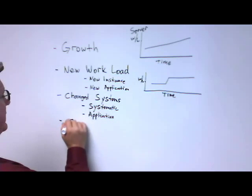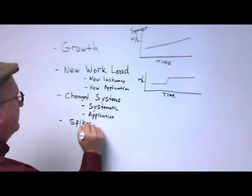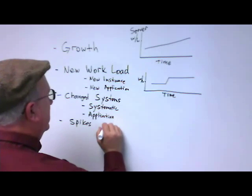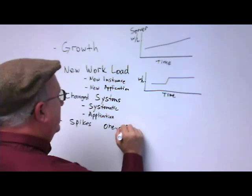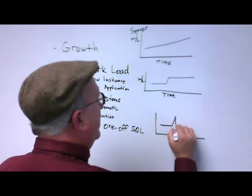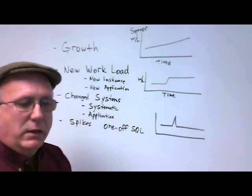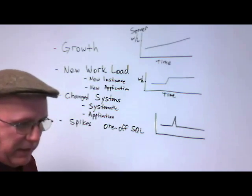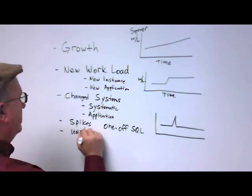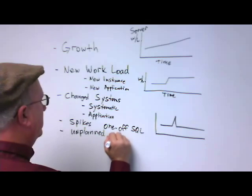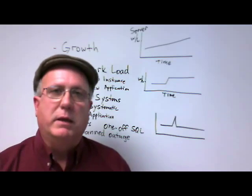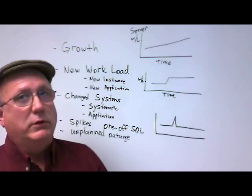The next area would be spikes in and of themselves. When I talk about spikes, this would be what I refer to as the one-off SQL — in terms of workload over time, this would appear as a spike to the system. The next is what I would call an unplanned outage, which would involve running out of space or having an overloaded system.